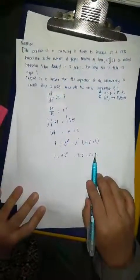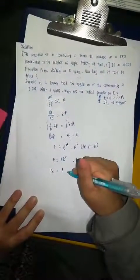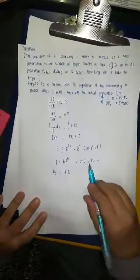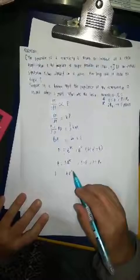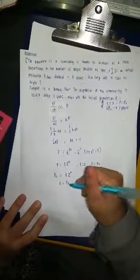We substitute it in here. We get P₀ equal to A e to the power of 0. Now, e to the power of 0 is equal to 1. So, we have A is equal to P₀.